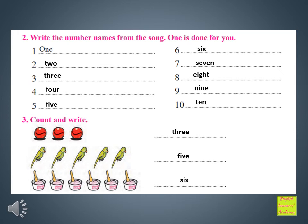1, 2, 3, 4, 5 — there are 5 parrots. 5: F-I-V-E.